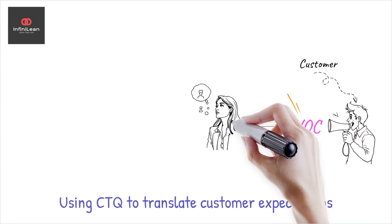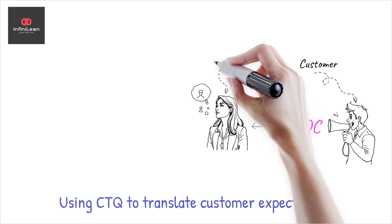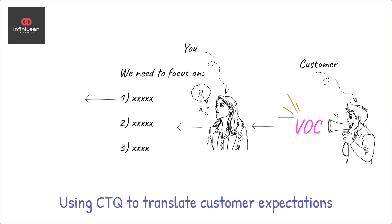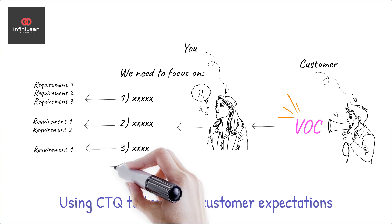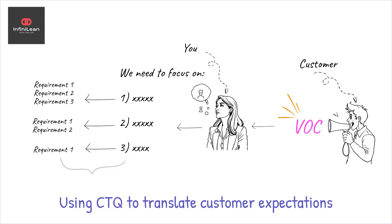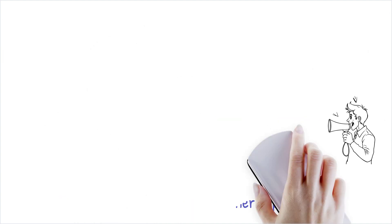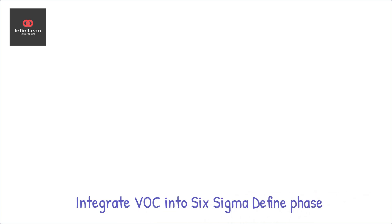Upcoming videos will explore additional techniques, such as the Kano model and Quality Function Deployment, QFD, which assist in translating customer needs into quantifiable elements. Then, integrate this information into the Define phase of your Six Sigma project, ensuring customer needs drive your objectives.